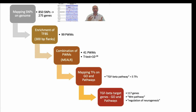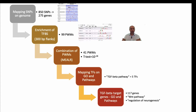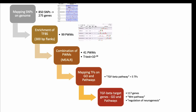Next, we took flanking regions around those SNPs and searched for enrichment of TFBS in those regions and we found 99 motifs — positional weight matrices which are enriched in those regions.